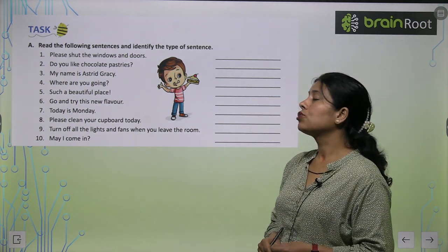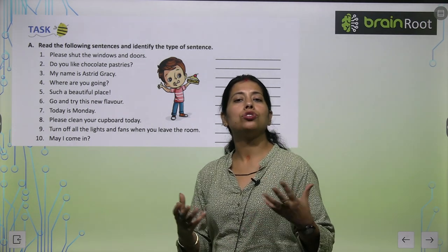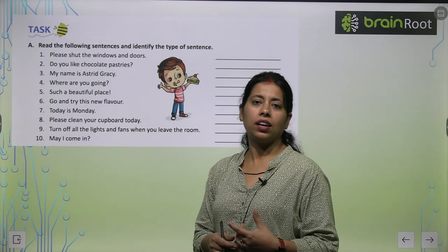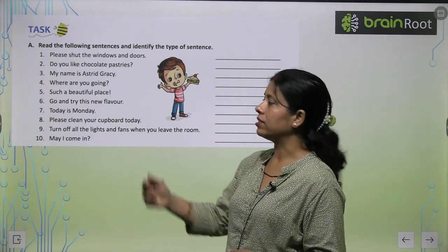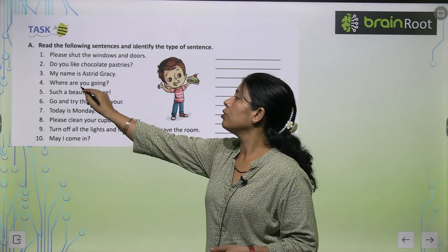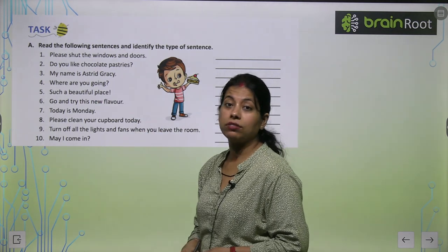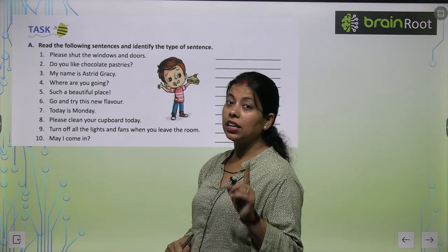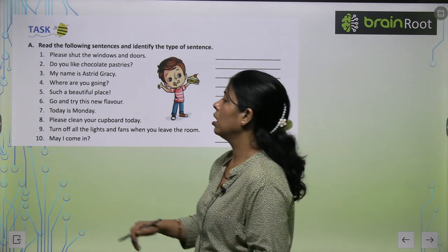'My name is Astrid Gracie.' — Here we are telling something, declaring something, so that is a declarative sentence. 'Where are you going?' — here we are asking a question, so that is an interrogative sentence.